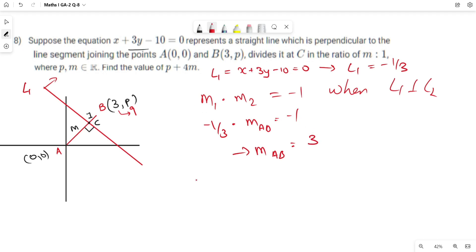Now slope of AB is 3. Equation of slope is y2 minus y1 divided by x2 minus x1 equals slope, which implies p by 3 equals 3, so p equals 9. Hence we got the value of p equals 9.